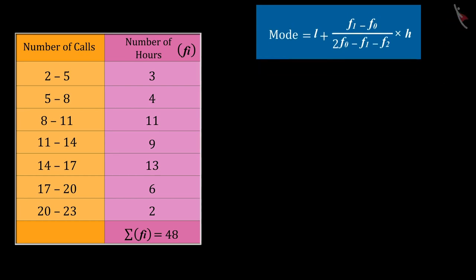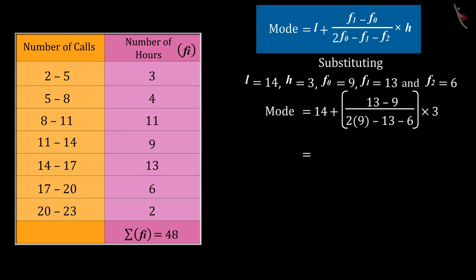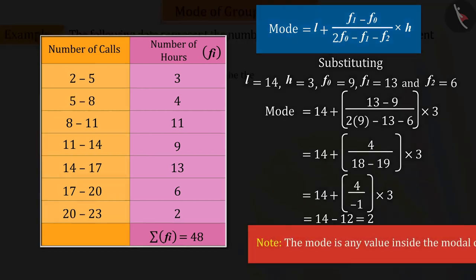Upon being solved, this gives the value of mode as 2, which is an incorrect answer, because the value of mode is any value inside the modal class.